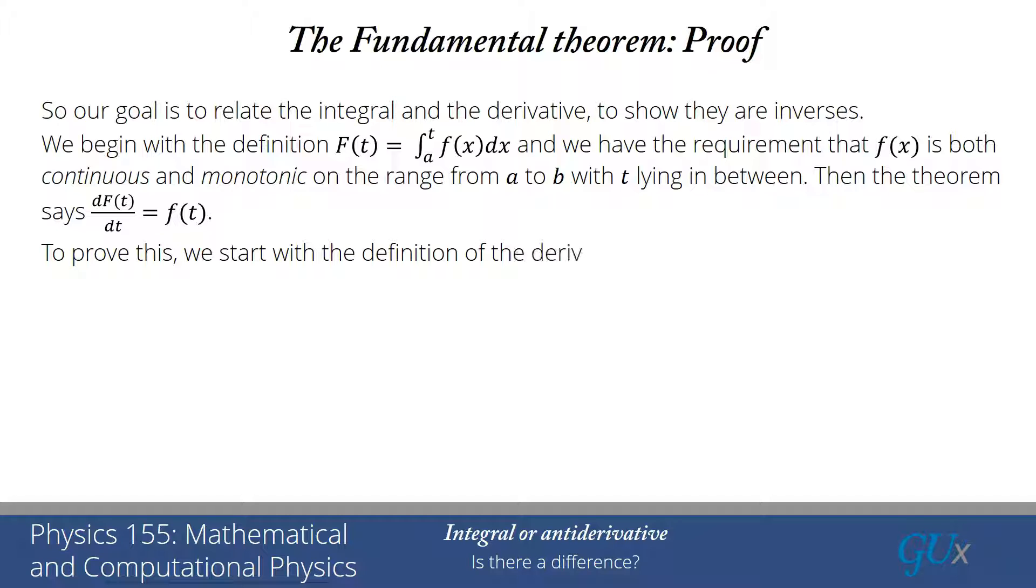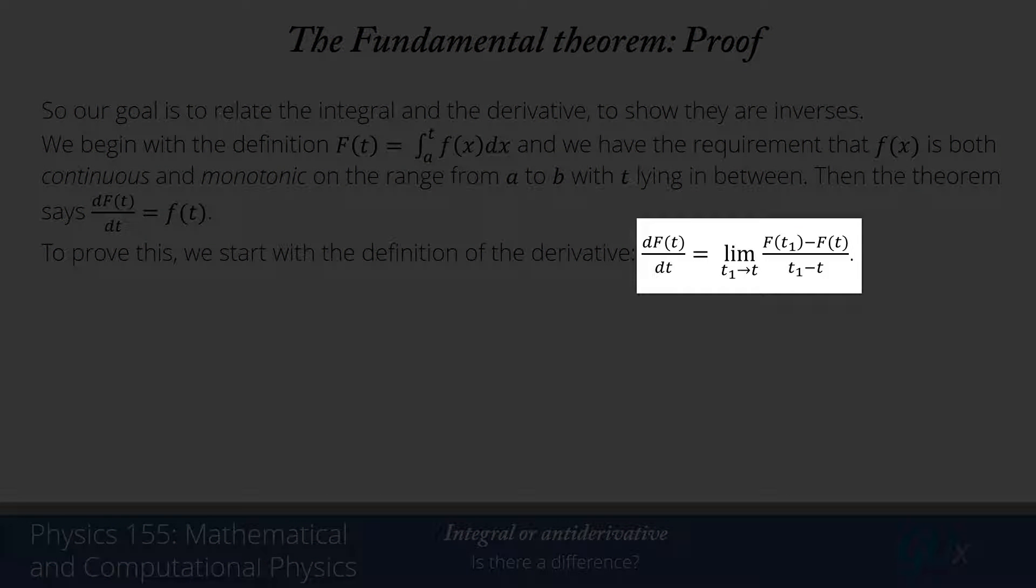So let's see how we prove it. So what we want to do, as we would for anything like this, we have to start with the definition. What is the definition of the derivative of capital F(t) with respect to t? Well, it's simply the limit [F(t1) - F(t)] / [t1 - t] in the limit as t1 approaches t.